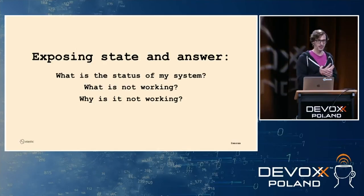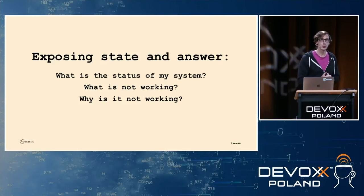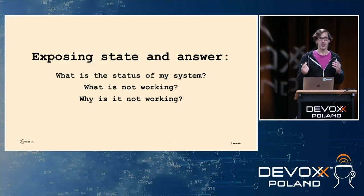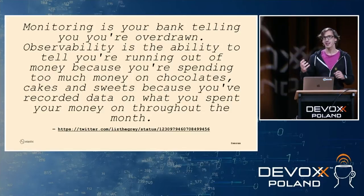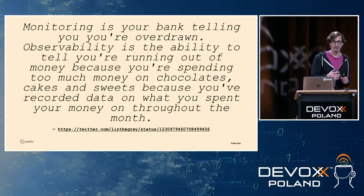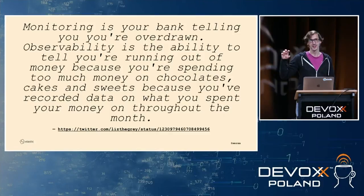The general idea is you want to expose state and answers. What is the status of my system? What is not working and why? It's not just having a fancy dashboard showing your error rate is too high — it's figuring out why. Is the service down? Is latency too high? Did my database stop? Like your bank telling you your account is overdrawn versus telling you you have no money because you spent it all on chocolate cakes. Observability is figuring out the why.